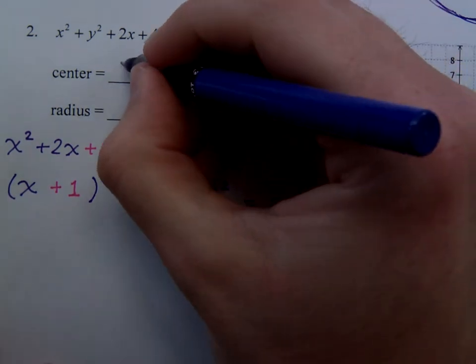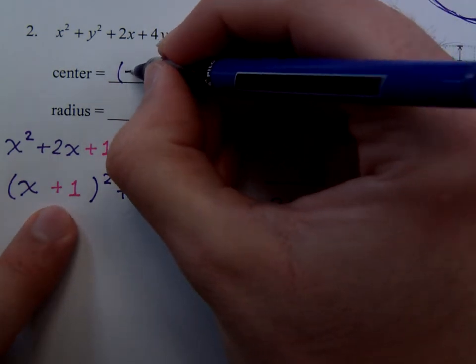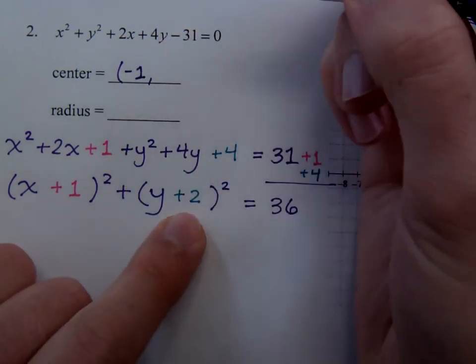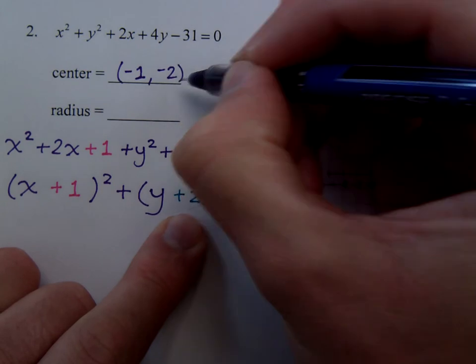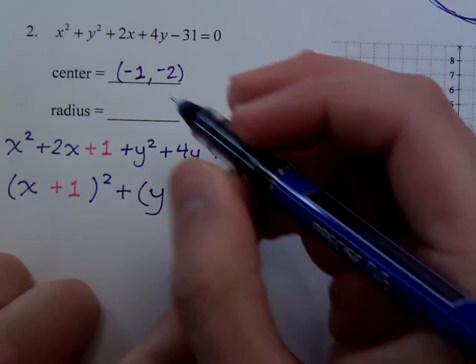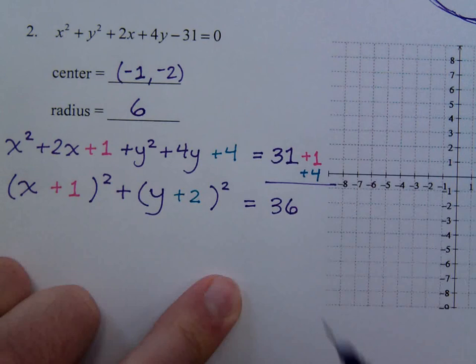So the center is going to be the opposite of what I see. So it's going to be negative 1, the opposite of what I see here, that's negative 2. The radius squared is 36, so the radius itself is just 6.